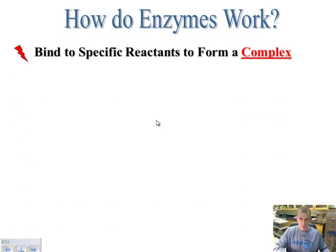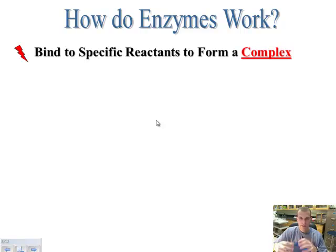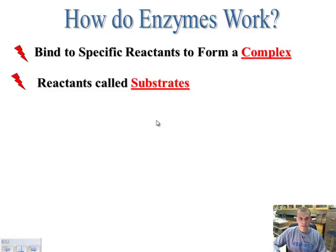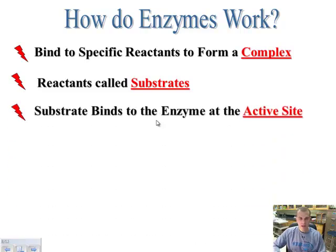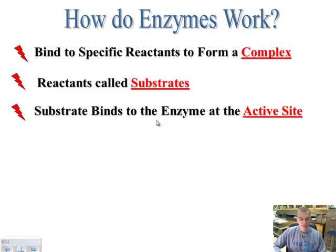So how do these enzymes work? What they do is they bind to specific reactants to form what we call a complex. Remember, enzymes are a protein, and proteins' function is defined by their shape. These enzymes are going to react with a specific reactant to form a complex. These reactants are called the substrates. The substrate will bind to the enzyme, and where this bonding occurs is referred to as the active site. So the substrates, or reactants, bond with the enzyme at the active site, and that will eventually get the process moving a lot faster.